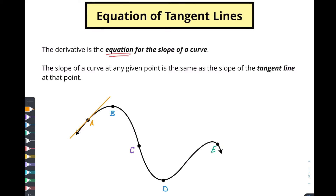If we wanted to find the tangent at point A, this is typically what we think of when we're thinking of finding the tangent at a point on a curve. What's happening is this line kind of kisses the curve so to speak — it just touches it at one point. That's what makes it a tangent. Another common one is point E, which is also typically what we think of when finding the tangent of a curve.